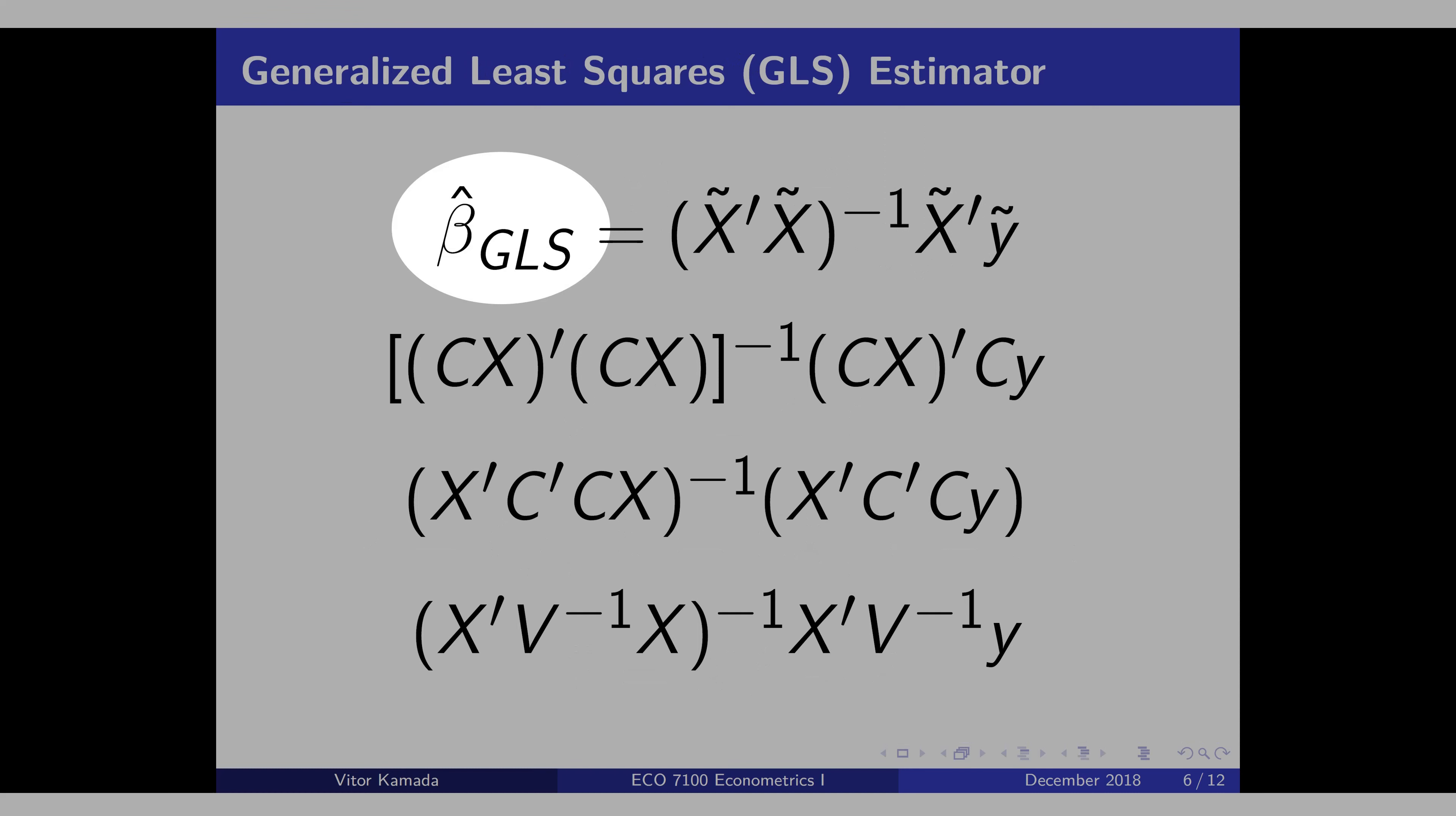Then we can show that the beta hat GLS can be written as this expression here. Note the inverse of V here inside, here and here. If V is the identity matrix, this collapses to ordinary square.